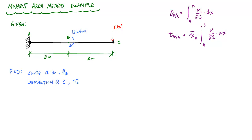What's up, everyone? Welcome back to Structure Free Learning. In this video, we continue our moment area method examples to calculate slopes and deflections. In this problem, we've got a cantilever beam with a concentrated moment applied at point B, a concentrated force applied at point C. We want to find the slope and deflection at point B, which is at the mid-span, and the vertical deflection at point C, labeled VC. Here are the two moment area theorems.